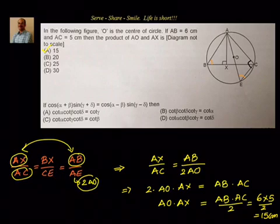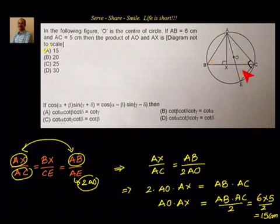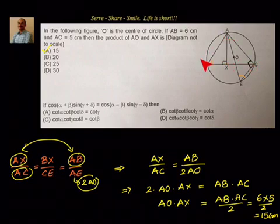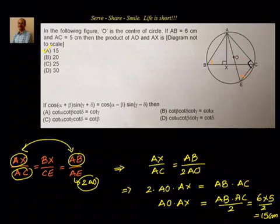To solve this problem, what we needed to understand is that we were given a right-angle triangle and could find another right-angle triangle. The circle was given so we could use the property that angles in the same segment are equal. With two equal angles and a 90-degree pair, the triangles are similar. Using AE = 2 × AO, we get AO × AX = 15 centimetres squared. Let's move to the next problem.